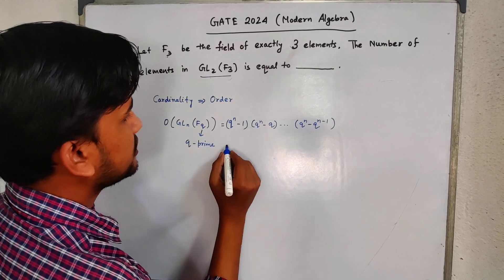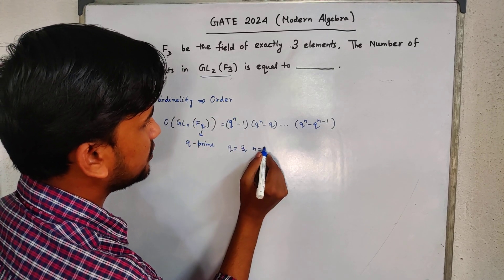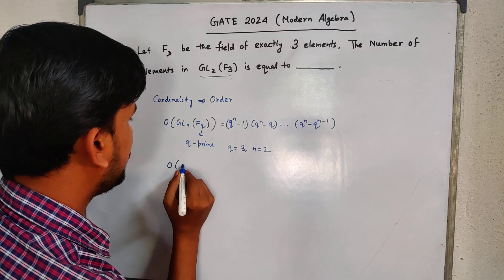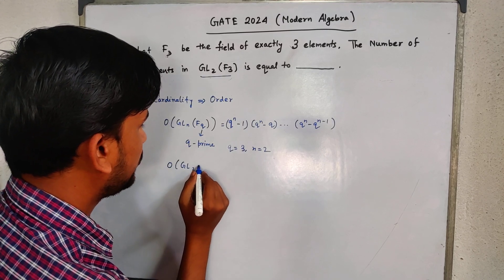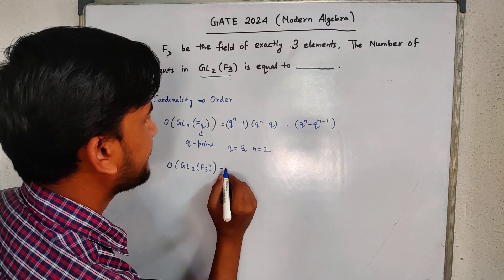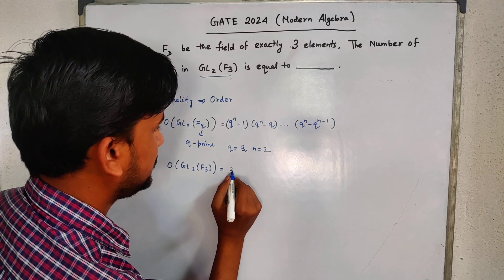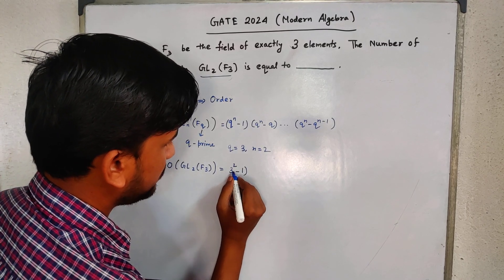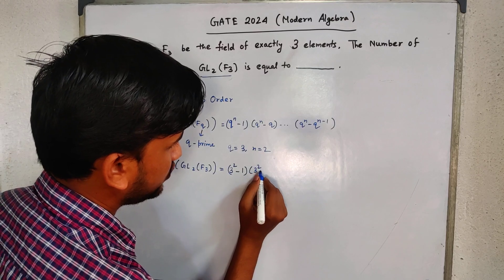Here Q equals 3 and n equals 2. Therefore, order of GL(2, F3) is equal to 3 to the power (2-1) times 3 to the power 2 minus 3 to the power 1. For n minus 1, we stop here.